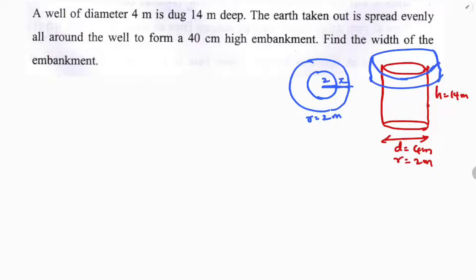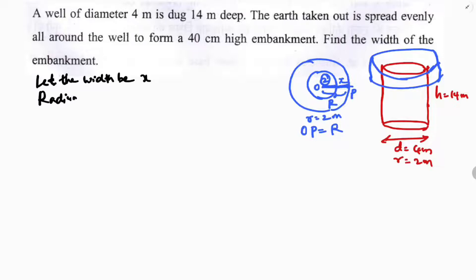From center O to external point P, I'll consider that distance as capital R. After getting capital R, I'll subtract the small r value to get the width x. So let the width be x. The radius of the well is 2 meters and OP is capital R meters.